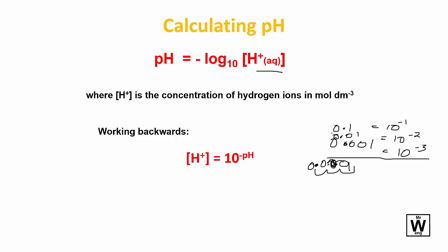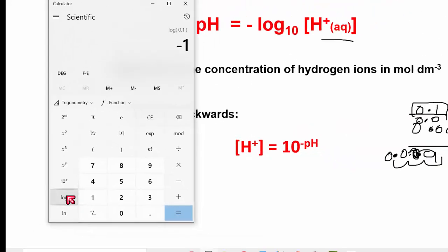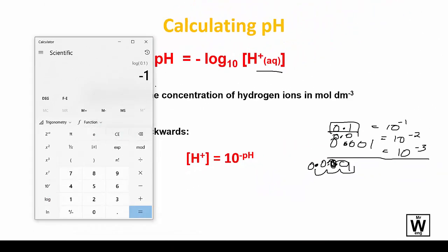If you grab your calculator out and grab that 0.1 and log it and negative, that'll give us a pH of 1. If we grab 0.01 and log it and take the negative, that'll give us a pH of 2. And if we grab 0.001 and log it, that'll give us a pH of 3 because you get rid of that negative. So the pH equals the negative log of the hydrogen ion concentration.